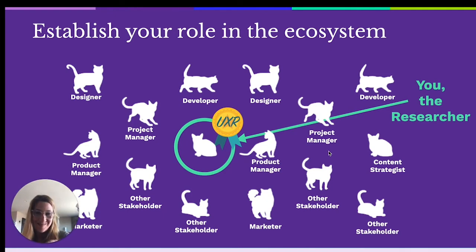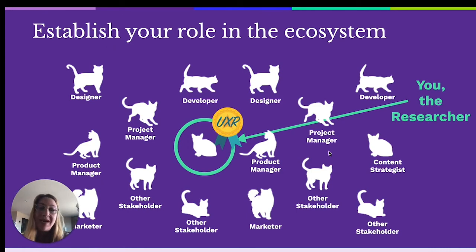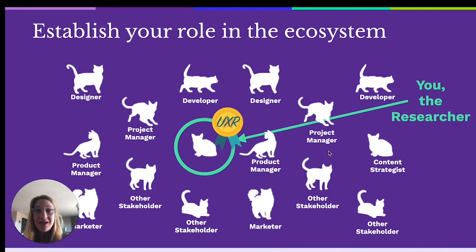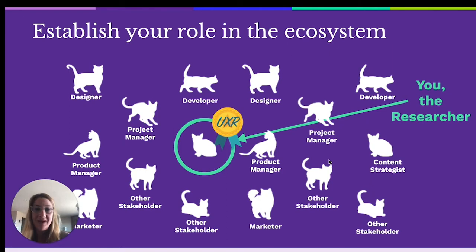If you can get into the mindset and habit of thinking about your stakeholders as an additional segment of users, you're going to be much better prepared to move through this process and build success from the get-go. Think about them in terms of corralling wandering cats. Part of your role as a researcher is to instill this collaboration very early on and maintain it throughout the process. That's you — the researcher — in the center, with all the stakeholders around you. These are the people most interested in the research, most invested in whatever topic you're exploring.